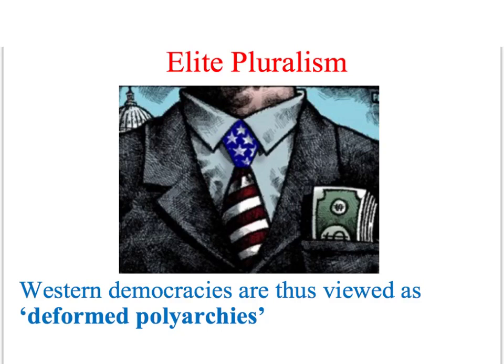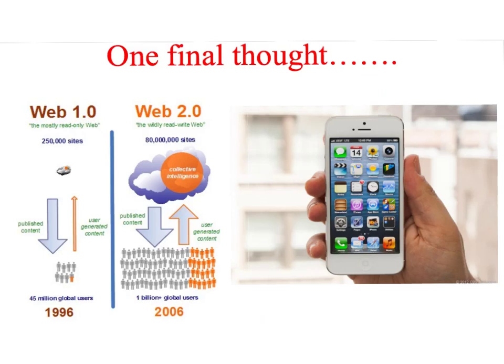From this perspective, Western democracies are far from perfect, are in need of reform, and are at best deformed polyarchies. One of the things that may help to reform established democracies is the use of new technologies, which have the potential to make it much easier for groups without much money or many resources to have an influence on the political process. There's much more detail on this topic in the screencasts on new social movements.